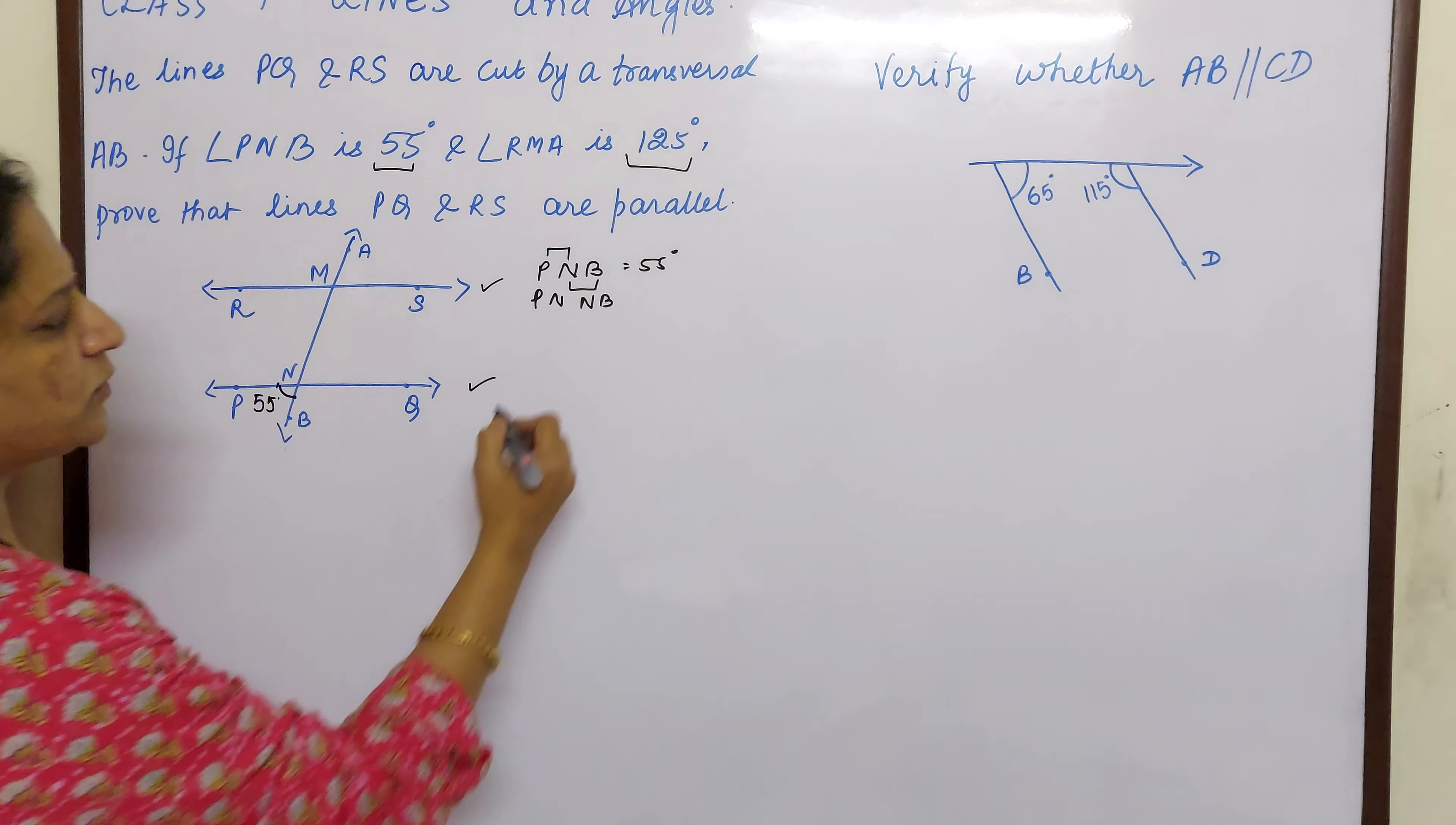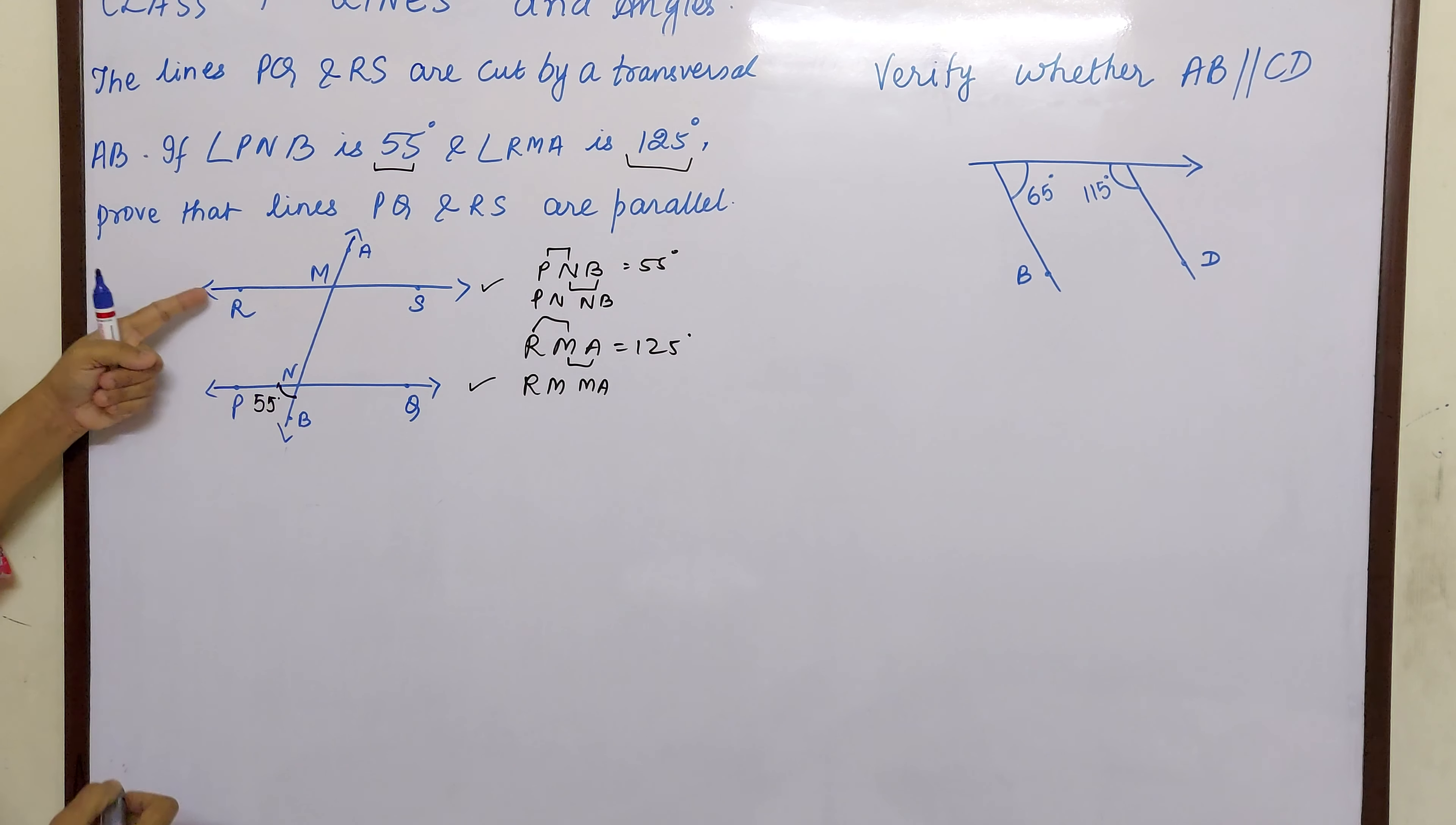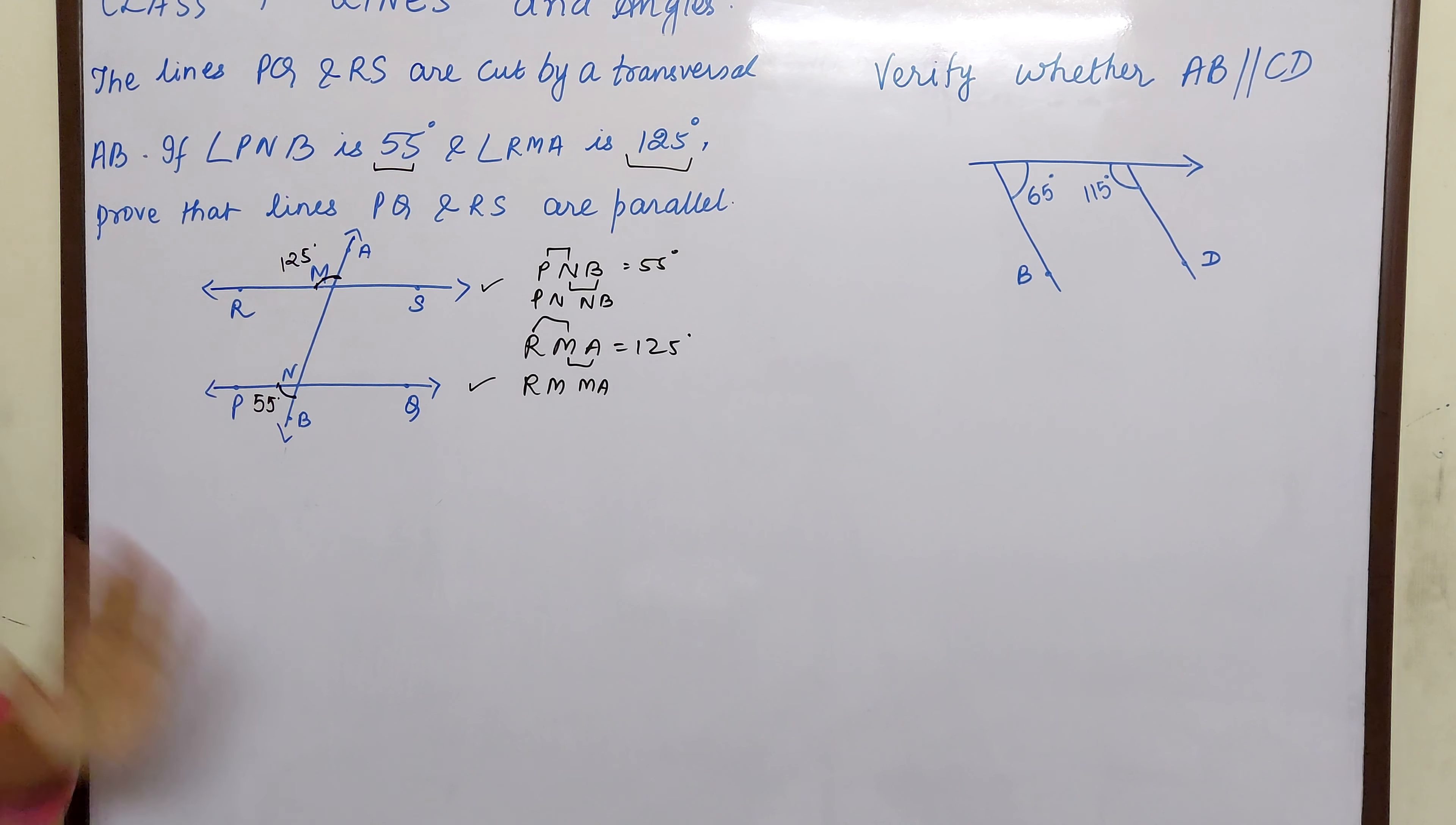Where RMA is 125? So RMA is 125. So RM plus MA. So let us see where is RM? RM is here and MA upwards. So RM is here and MA is upwards. So that means this is 125. So now you know how to mark it.